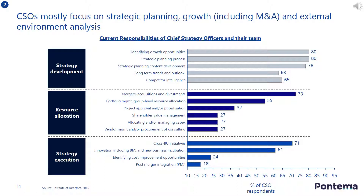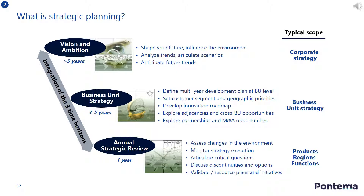However, it is interesting that elements such as M&A show up among the top responsibilities, indicating how the CSO role is widening in scope and responsibility. But what is strategic planning? It depends on your time horizon. Some organizations conduct annual strategic reviews, where they typically assess changes in the competitive environment, monitor the execution of current strategy initiatives, and discuss resource plans. Business unit strategy typically has a three- to five-year outlook and defines the customer segments and priority geographies, together with innovation roadmaps and possible merger and acquisition opportunities. And vision statement planning is a typical corporate strategy activity with a five-year outlook, requiring strategy planners to work with the CEO to help shape the organization's future ambitions.